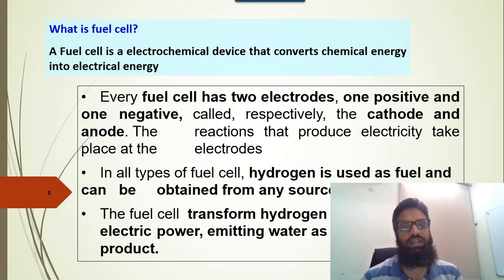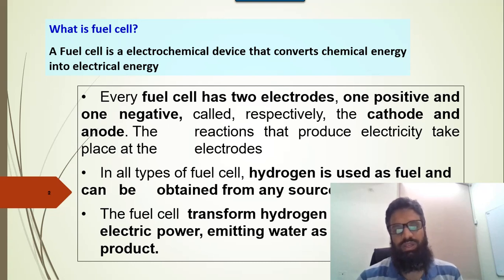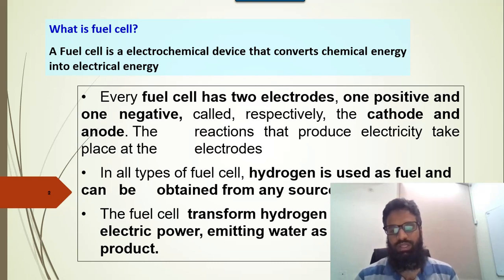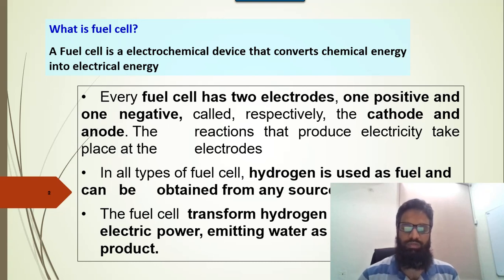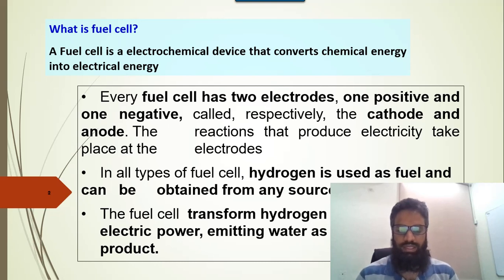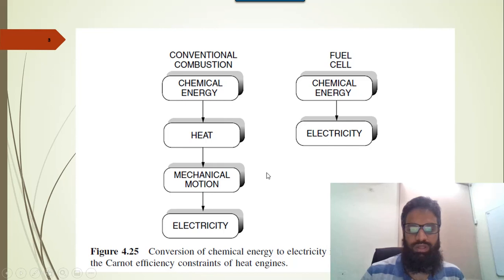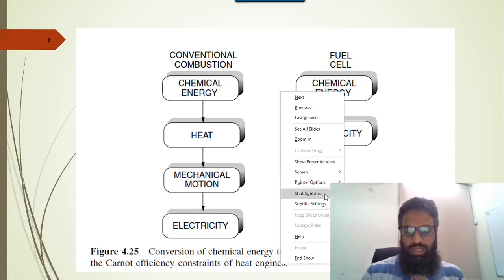A fuel cell is an electrochemical device that converts chemical energy into electrical energy. Its structure is similar to batteries — it consists of two electrodes, one positive known as the anode and one negative known as the cathode. We use hydrogen as a fuel, which is processed to form electricity, and it reacts with oxygen to form water and heat.